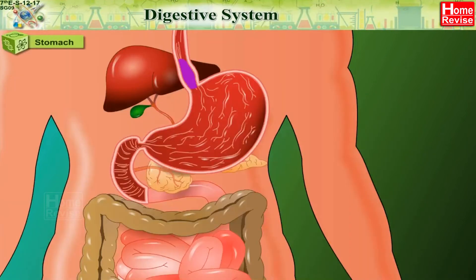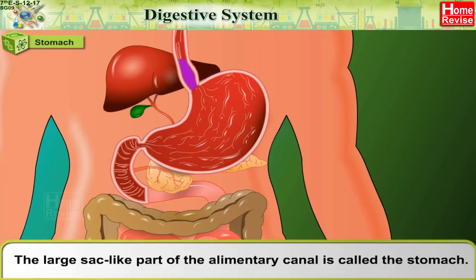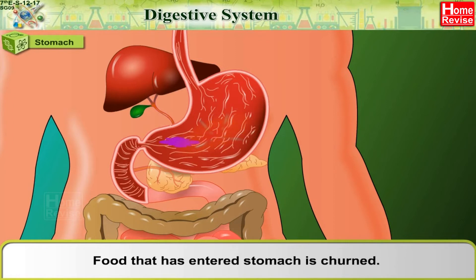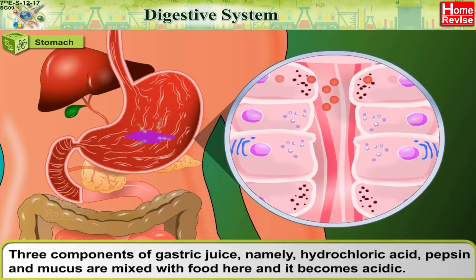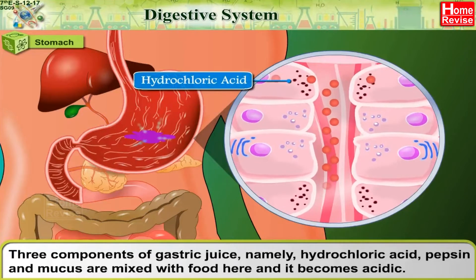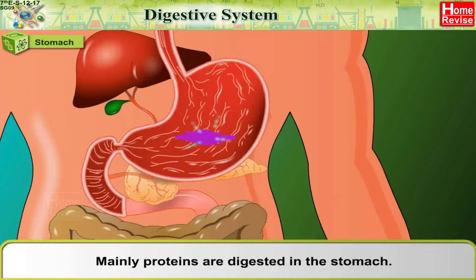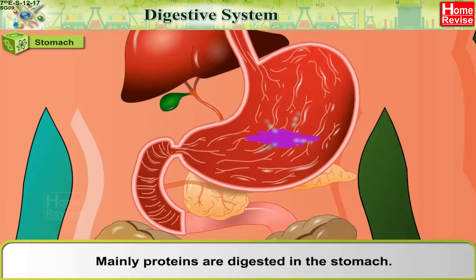Stomach: The large sack-like part of the alimentary canal is called the stomach. The gastric glands of the stomach secrete gastric juice. Food that has entered the stomach is churned, and three components of gastric juice — hydrochloric acid, pepsin, and mucus — are mixed with the food, making it acidic. Mainly proteins are digested in the stomach.